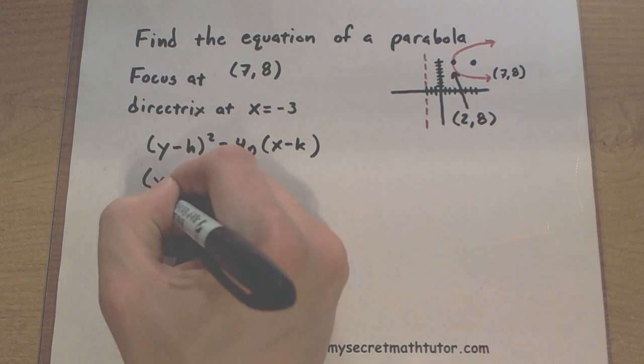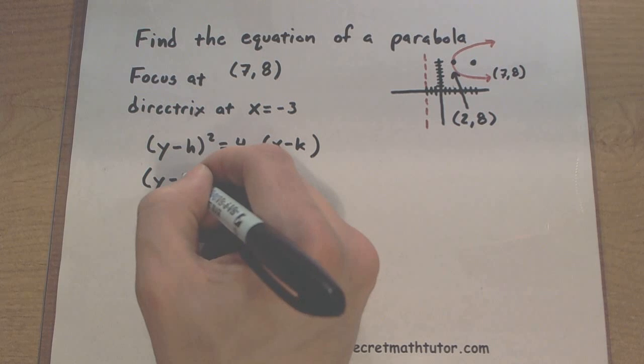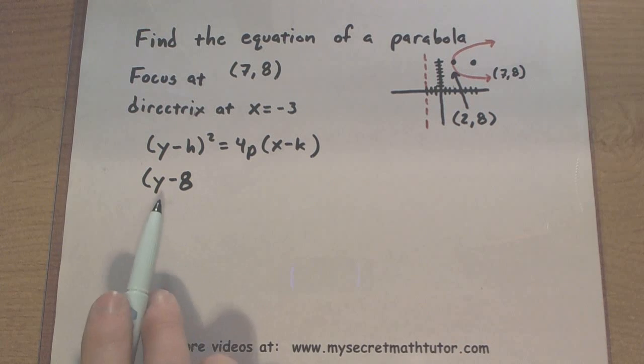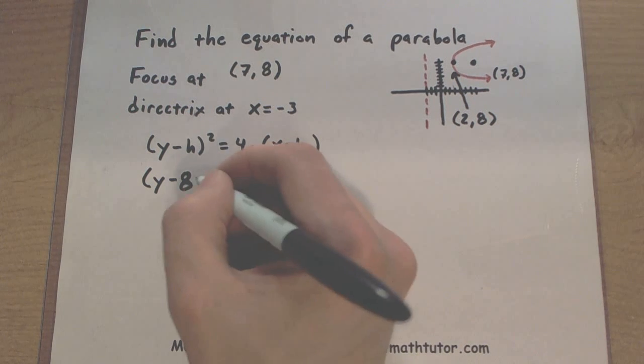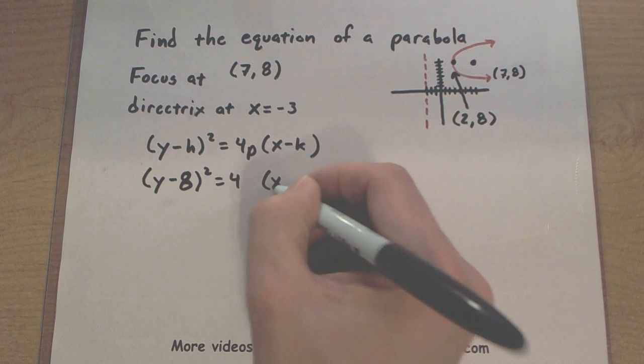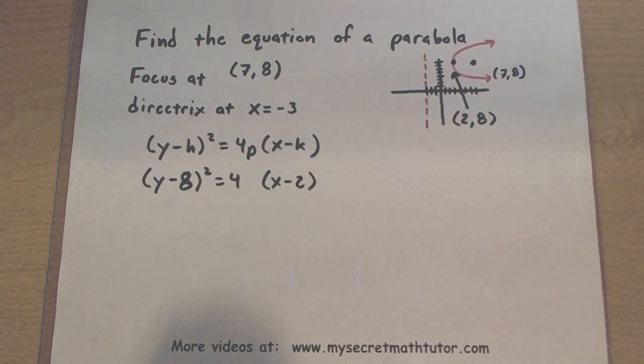So let's go ahead and drop in our pieces. My vertex is located at 2, 8. Make sure you match your 8, that's a y. And we'll put the 2 with the x.